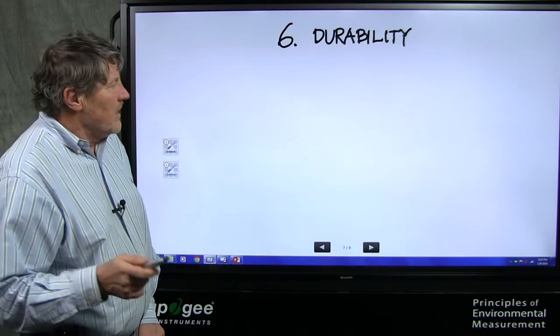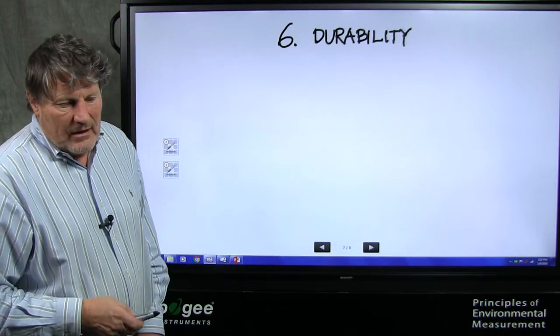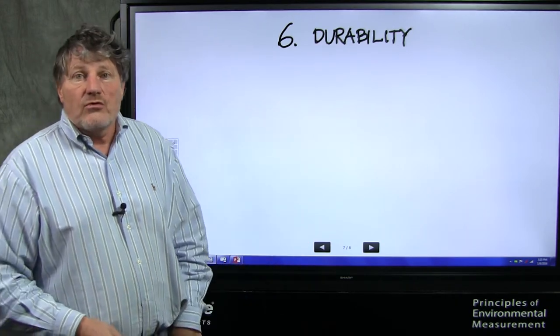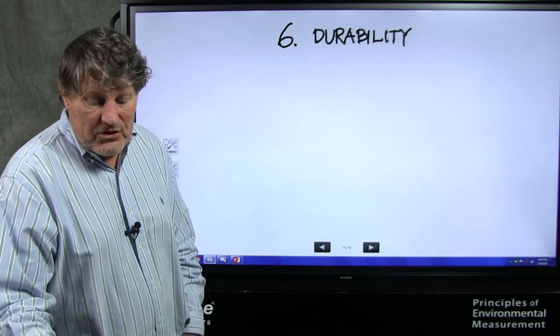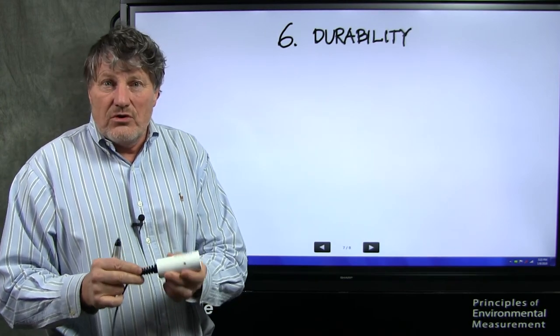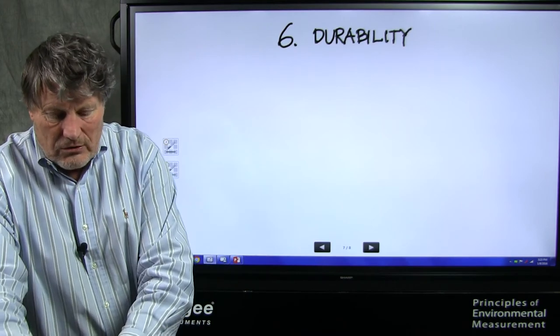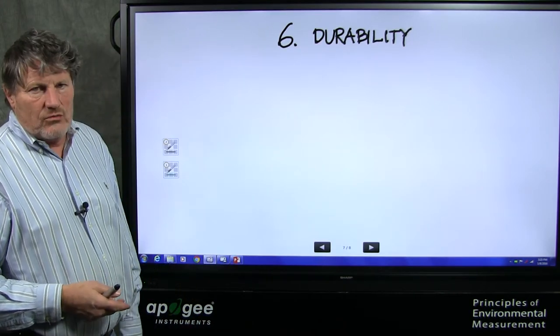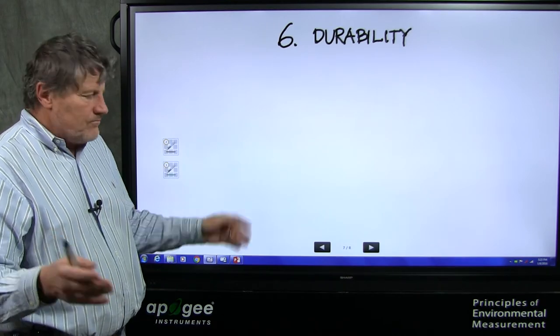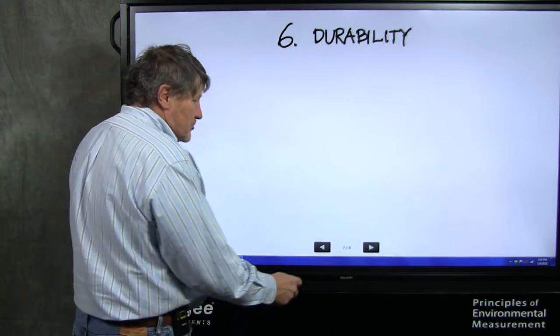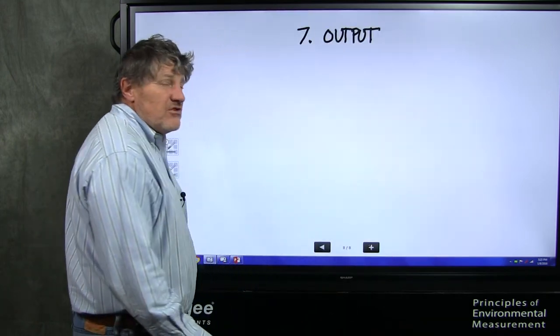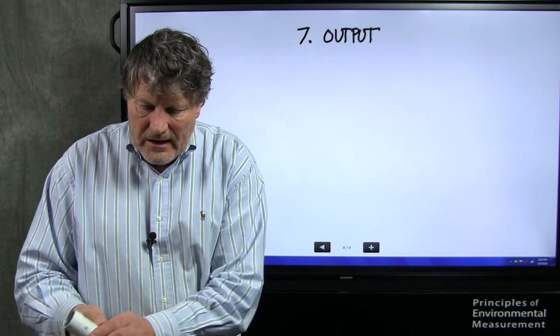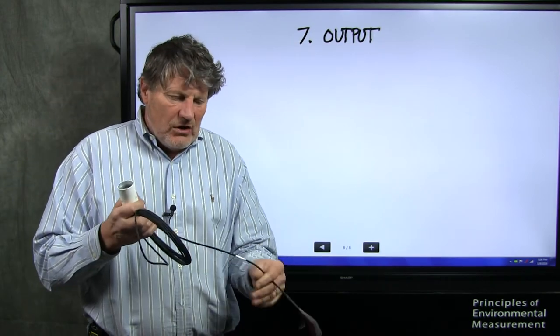Number six, durability. A sensor like this is not designed for continuous outdoor field use. The Apogee sensors are designed for year after year measurements in the field. So if you make the investment in a good sensor, you sure want it to work, and you want it to work reliably through harsh weather conditions.